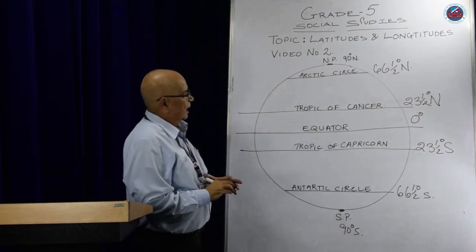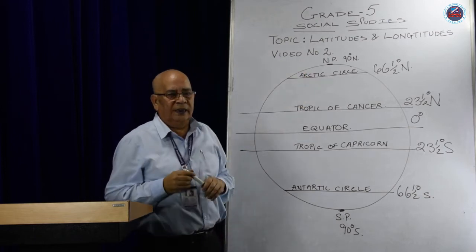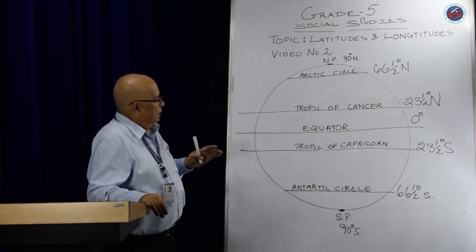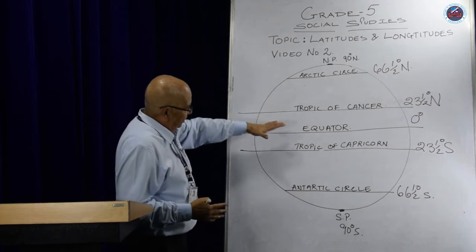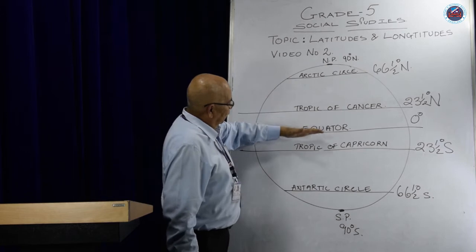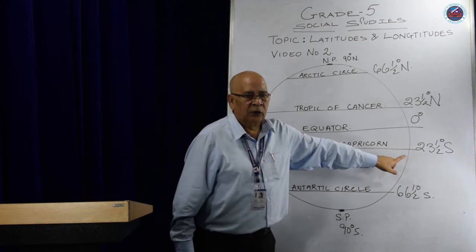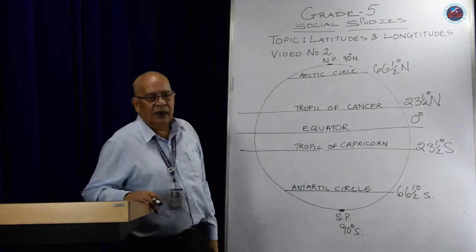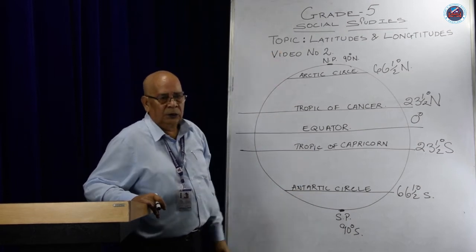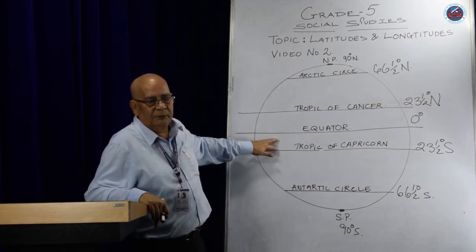Another thing regarding latitudes — they never touch each other. They are also known as parallels of latitudes. If you notice, the more they move towards the north or the more they move towards the south, they get smaller in size. They become smaller as they advance towards the north pole and the south pole. The equator is the largest latitude.